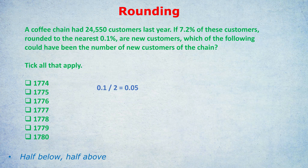To repeat: if they say rounding to a certain thing — to the nearest 0.1% or 0.5%, whatever they say — take that figure and divide it by 2. Then add the result to our figure for the upper bound. In this case they said 7.2%, so we add 0.05 and get 7.25 as the upper bound. For the lower end, we take away 0.05 from 7.2, which gives us 7.15.